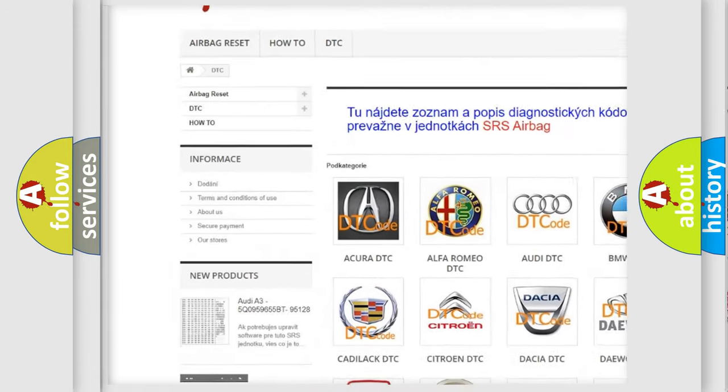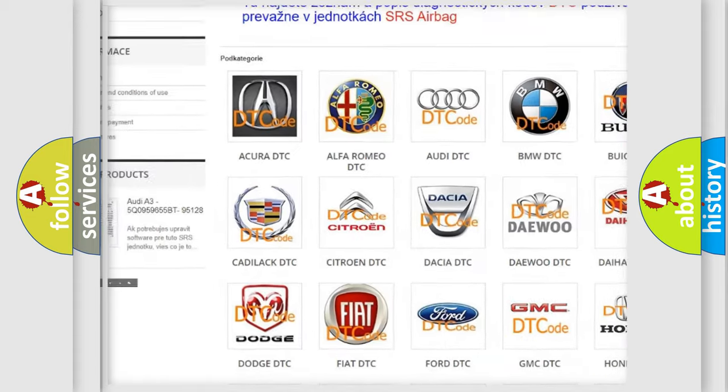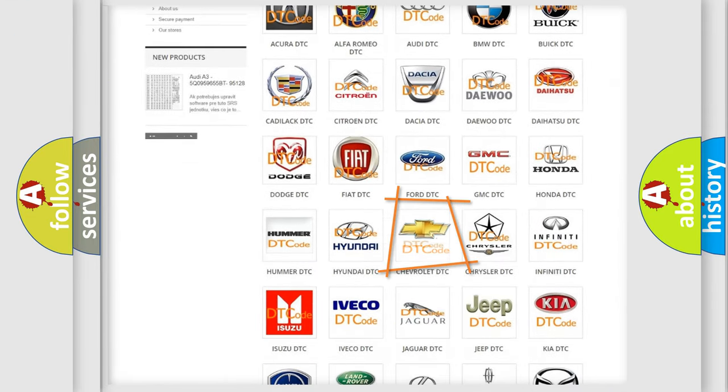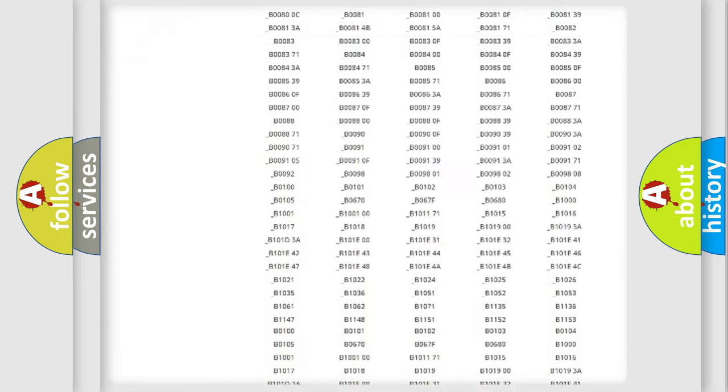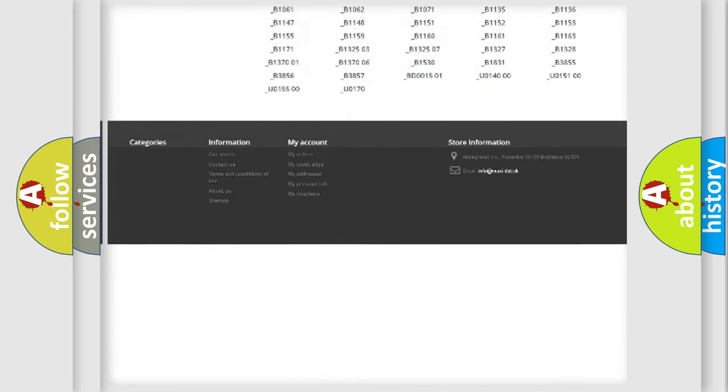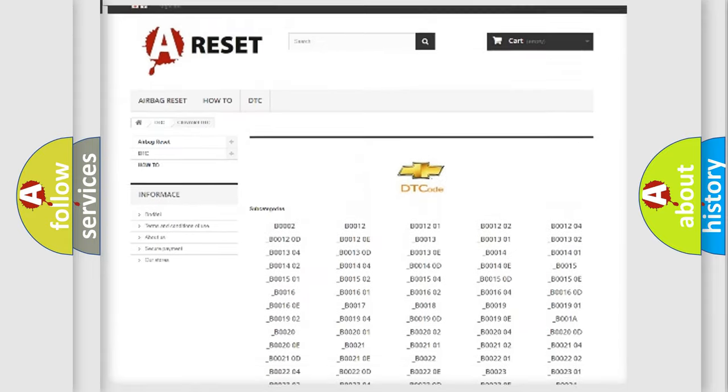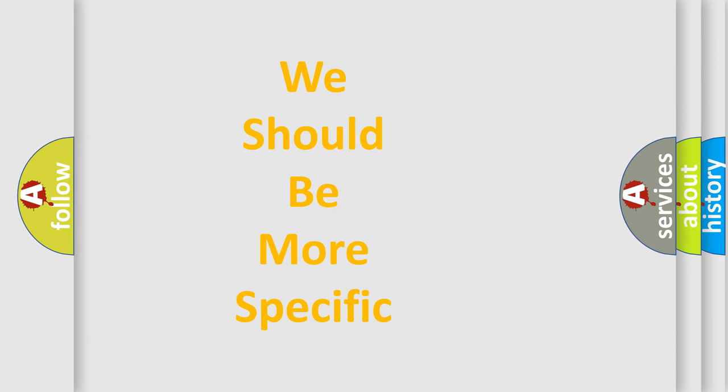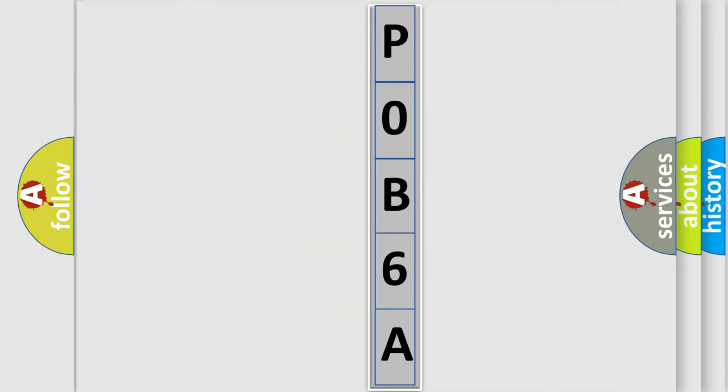Our website airbagreset.sk produces useful videos for you. You do not have to go through the OBD2 protocol anymore to know how to troubleshoot any car breakdown. You will find all the diagnostic codes that can be diagnosed in Chevrolet vehicles, and many other useful things. The following demonstration will help you look into the world of software for car control units.